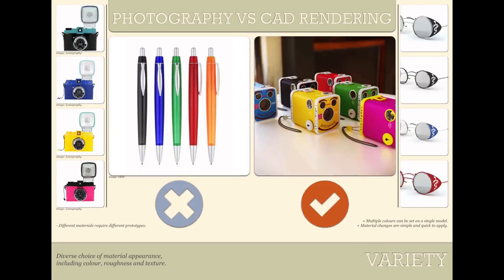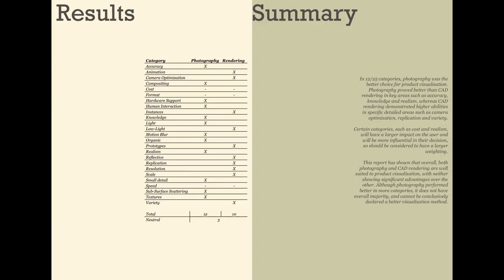Finally, the last category is variety — showing the same product with the same physical characteristics but different materials such as colour or texture. CAD rendering was a clear winner. With the same CAD model you can apply different textures, colours, reflectiveness, transparency, and whatever else you need. But with photography, unless you get clever adjusting hue in external imaging processing software, you will need a different prototype for every single material. So CAD rendering was an easy winner here.